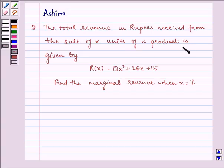of a product is given by R(x) = 13x² + 26x + 15. Find the marginal revenue when x = 7.